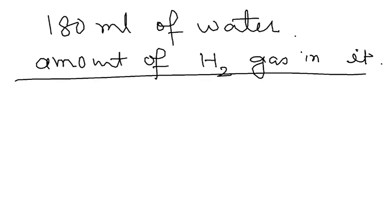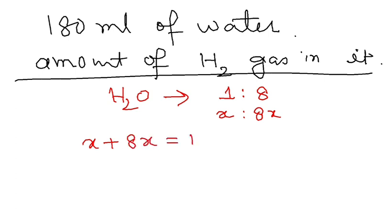How to solve this kind of particular question? Very easy. We know that for water, the ratio by mass is 1 is to 8. So I can take the mass of hydrogen as X and it will be 8X. So X plus 8X, the total is 180.